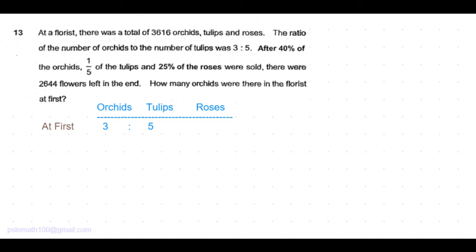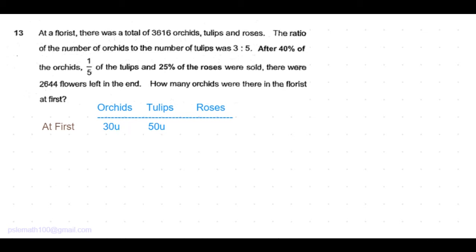Let's assume a more comfortable number where it is possible to find 40%. So instead of 3 units and 5 units, let's have the orchids and tulips as 30 units and 50 units. As long as we maintain the orchids to tulips ratio as 3 to 5, it is fine.